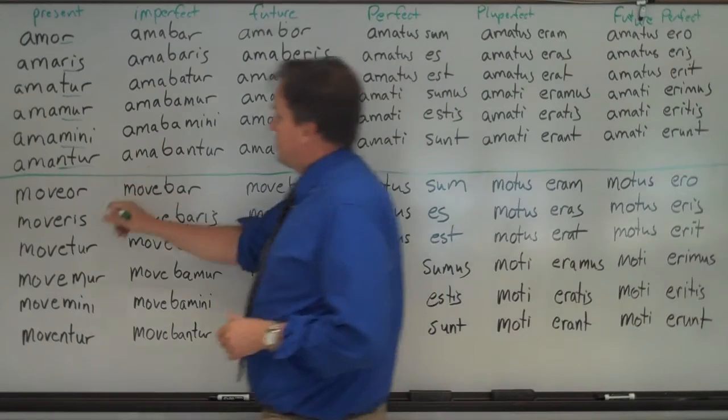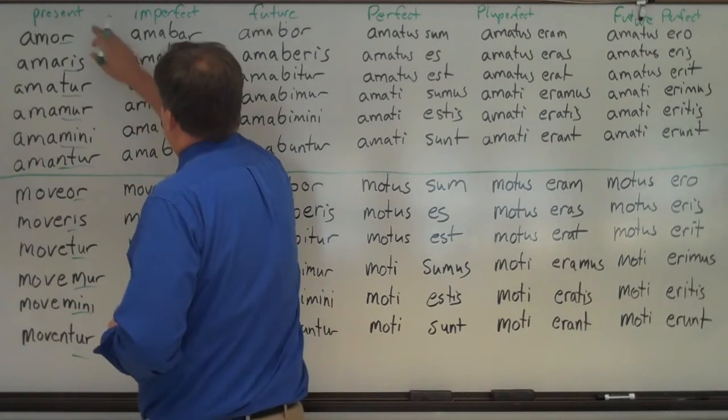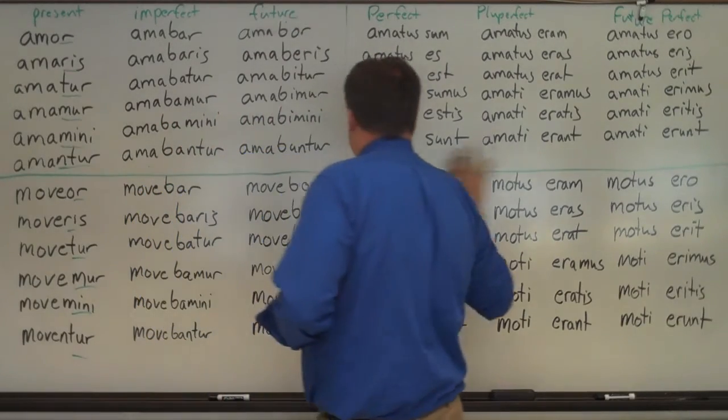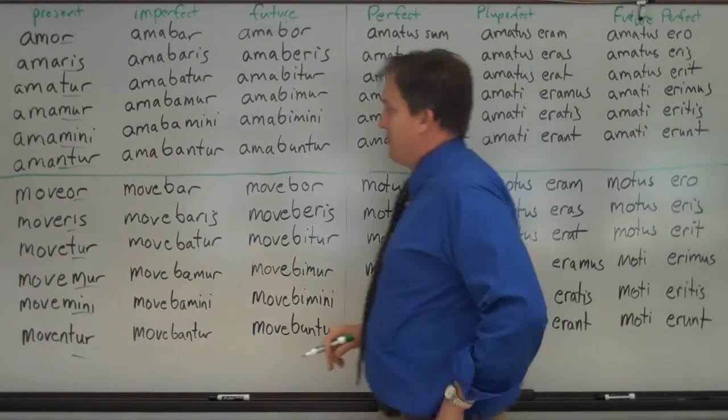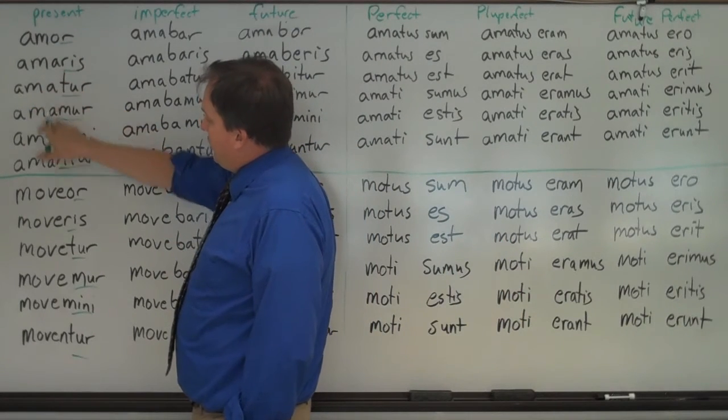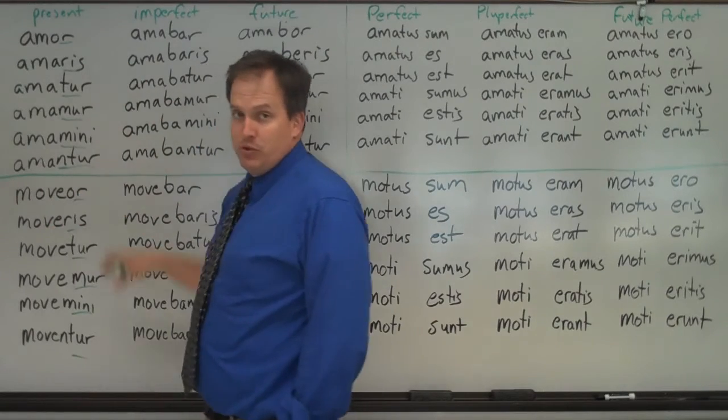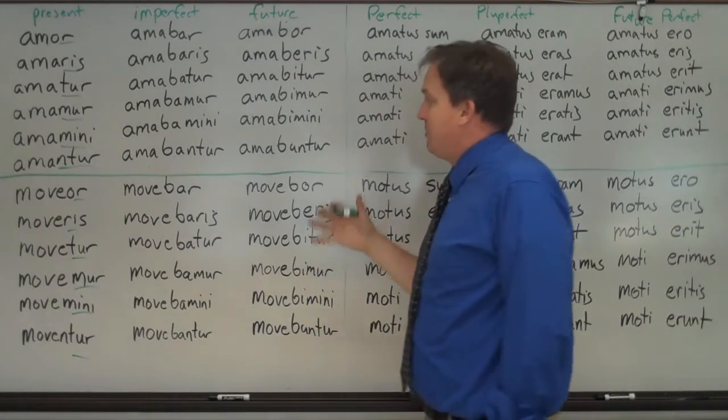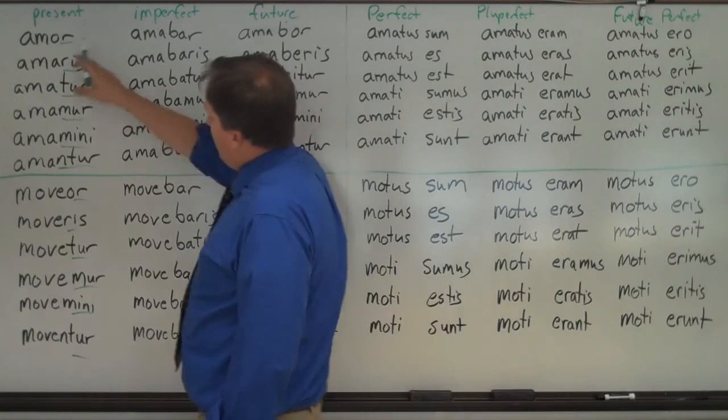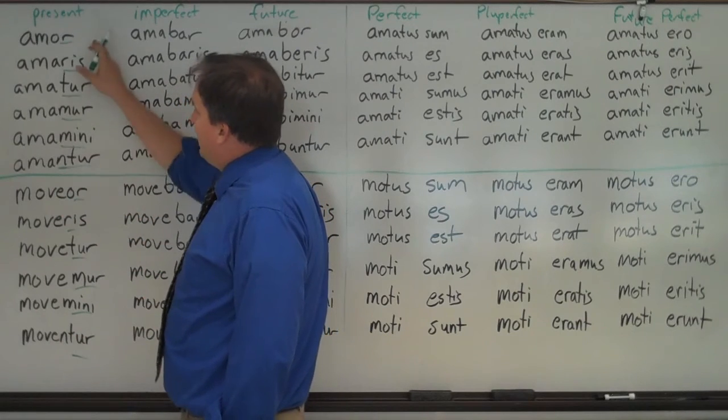Remember, you have those passive endings, and those are used for the present, imperfect, and future. You can see the vowel here for the first has an A all the way through. The second has an E, it goes moeor. If you need to stop it, so you can take the time, that's the beauty of these videos. We have an E here going all the way through for the second.